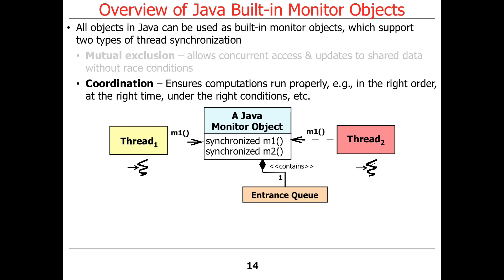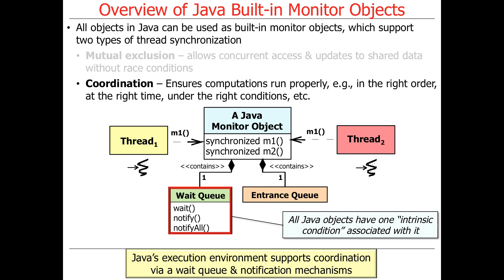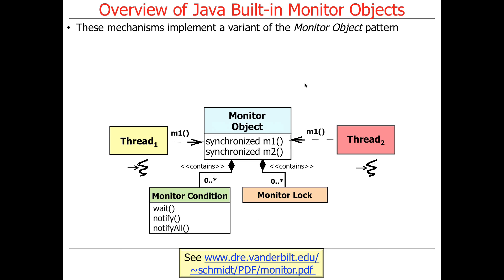The second thing you can do is coordinate computations to run in the right order, at the right time, under the right conditions. In addition to the entrance queue, there's also a wait queue. A Java execution environment, like a Java Virtual Machine, supports coordination via the wait queue and notification mechanisms. All Java objects have one and only one intrinsic condition associated with them — one intrinsic lock and one intrinsic condition. All the complexity with Java monitor objects stems from the fact that there's only one condition and one wait queue.